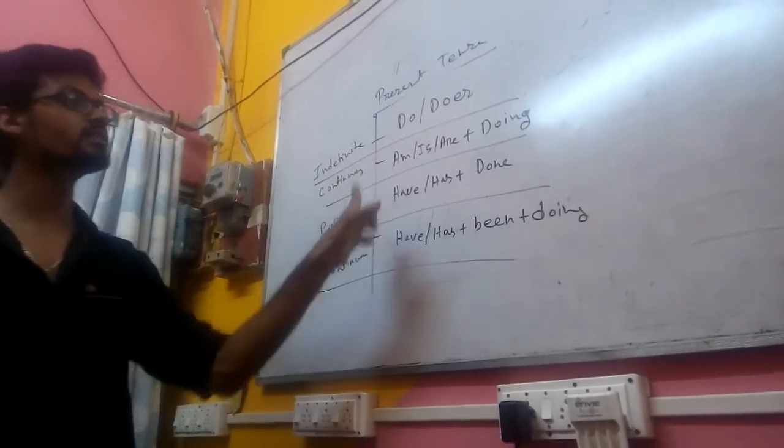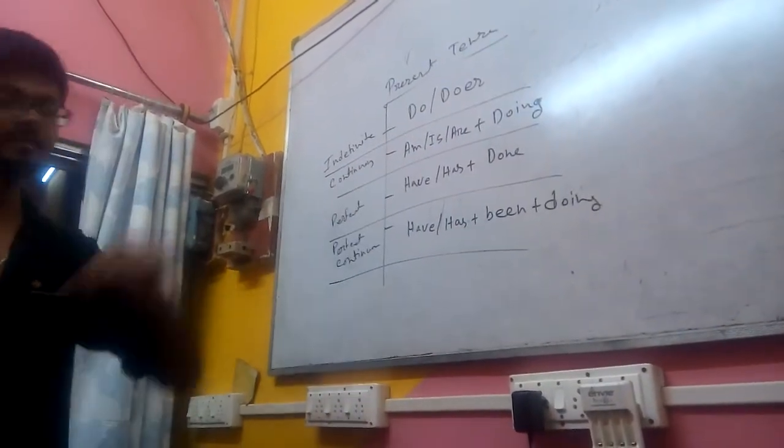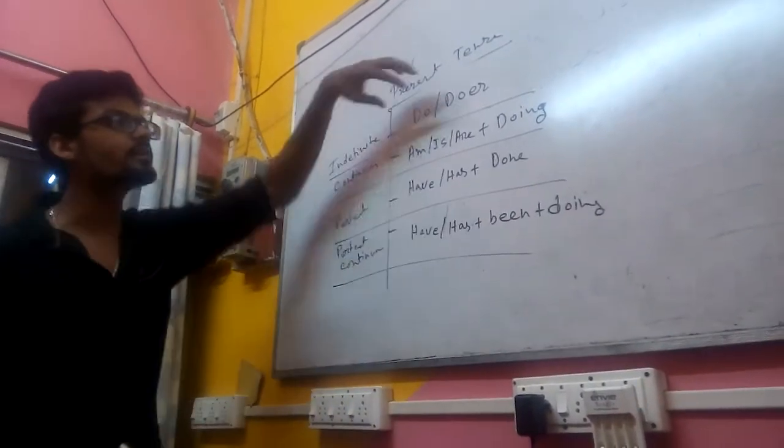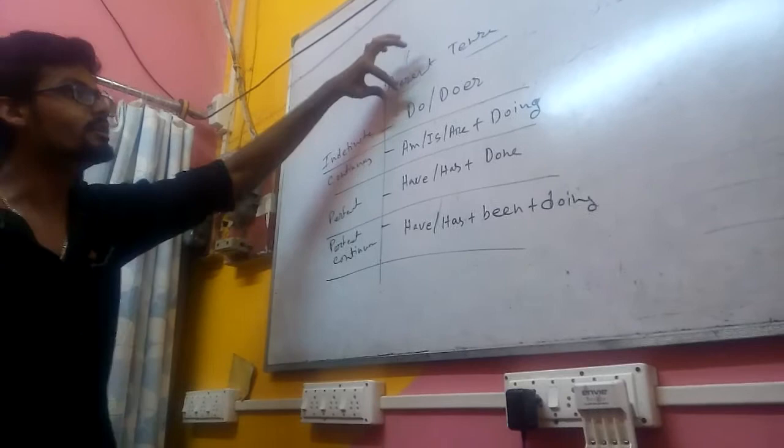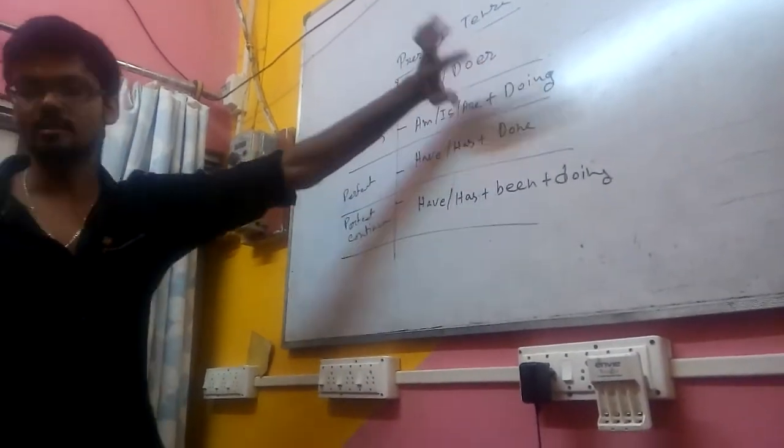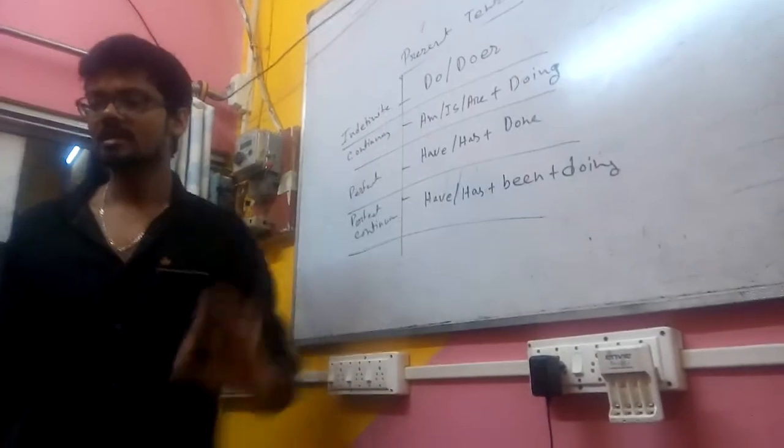These are the structures. In a sentence, if we write this normally: I do, I am doing, I have done, I have been doing.